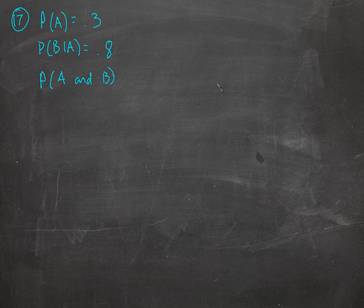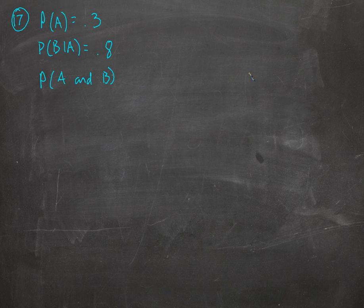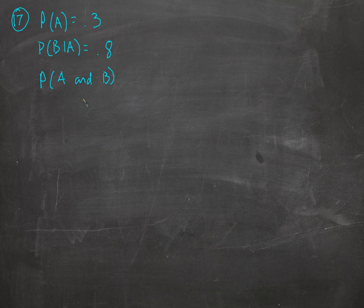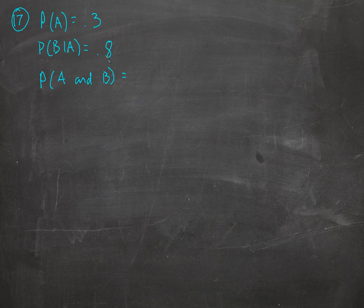Now we get into conditional probabilities, which are not independent — we can call them dependent probabilities. That means there's some kind of condition affecting the probability of the second event. Like you pick a card, you don't put it back, and you pick a second card. That first card being gone is going to affect the probability of the second card — how likely it is that it'll be a king or a spade or whatever.